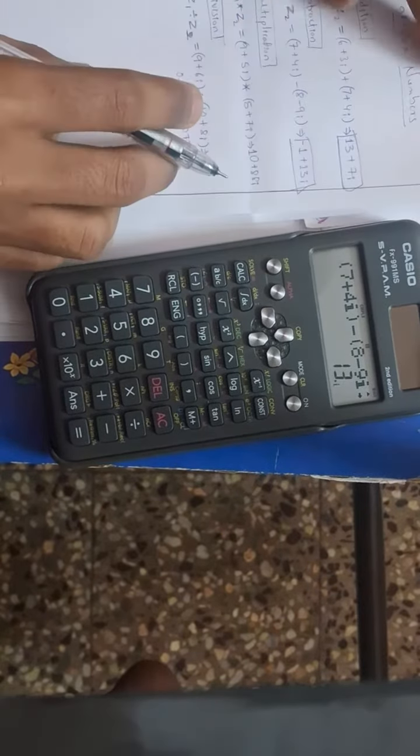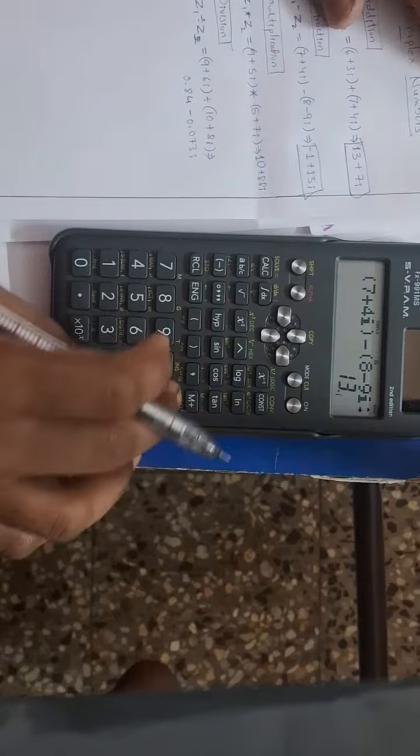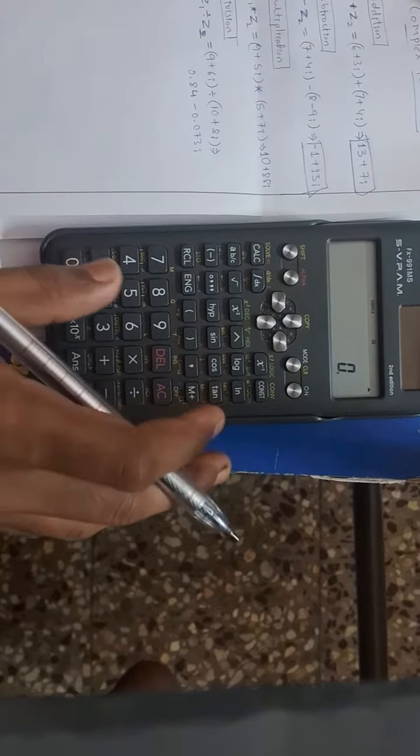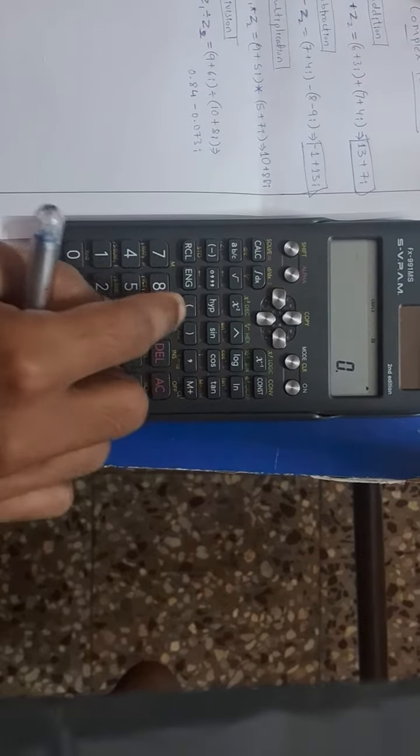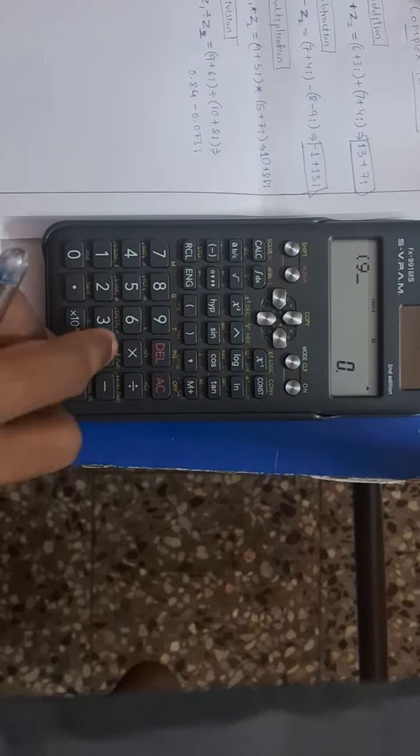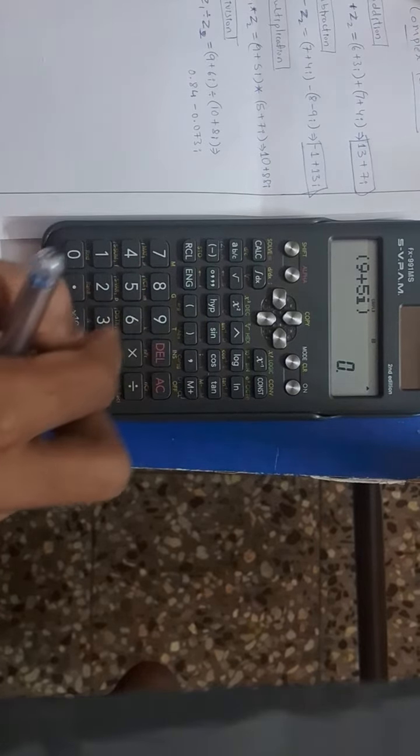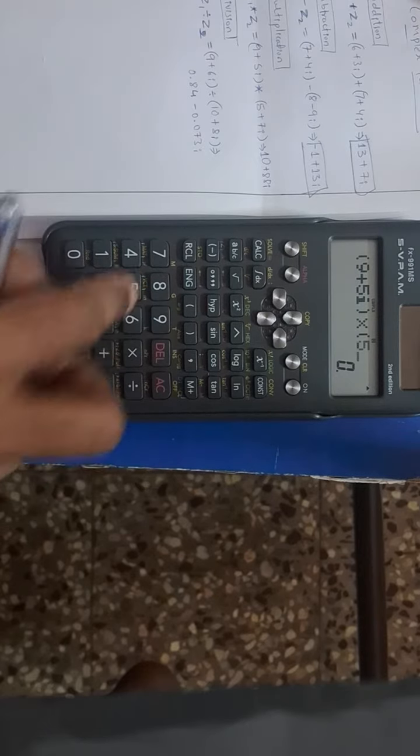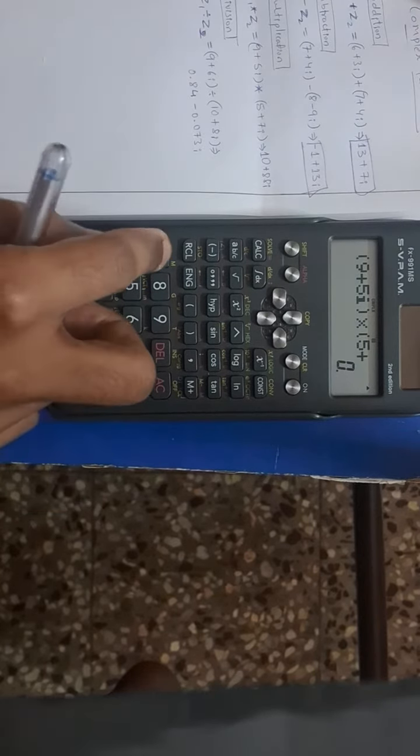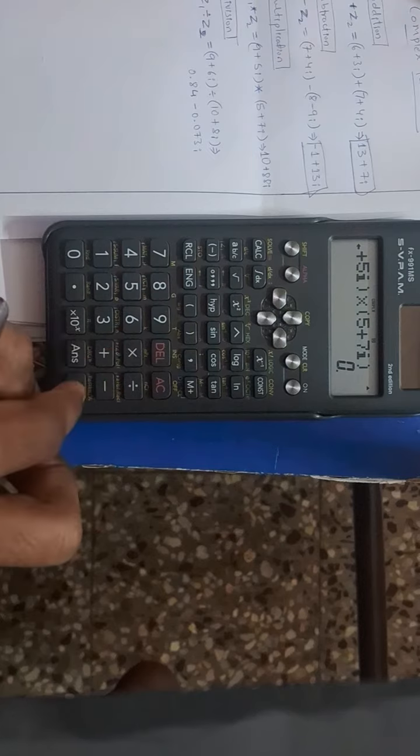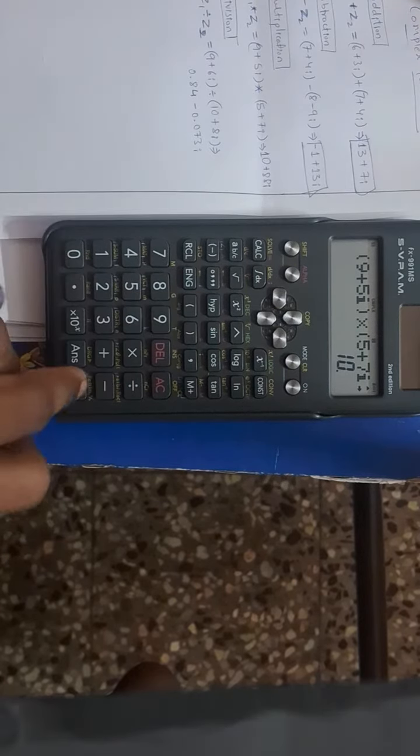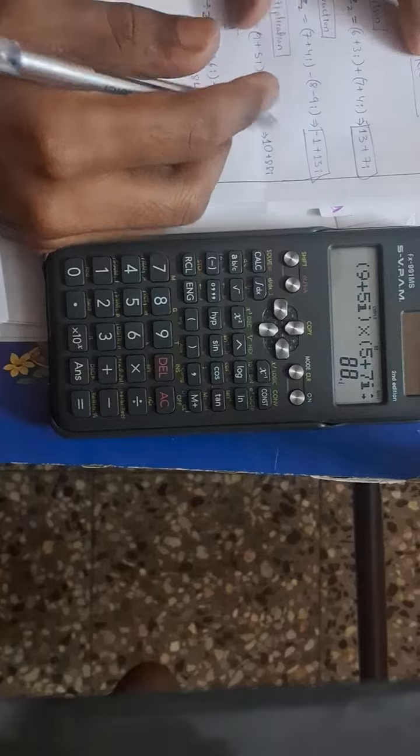Now multiplication of two complex numbers: z1 into z2. (9 plus 5i) into (5 plus 7i) equals 10. Imaginary part is 88: 10 plus 88i.